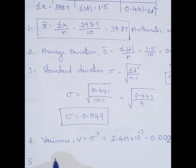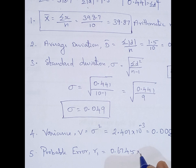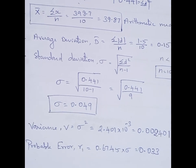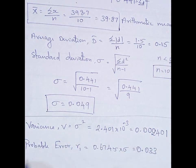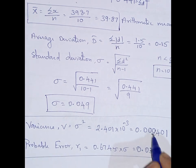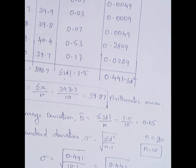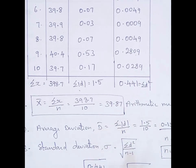Then probable error: the probable error of one reading, R₁, equals 0.6745 multiplied by sigma. Multiplying gives 0.033, which is the probable error. So I now have all the values: arithmetic mean is 39.87, average deviation is 0.15, standard deviation is 0.041, variance is 0.002401, and probable error is 0.033. Thank you all for watching.